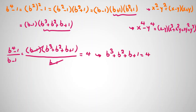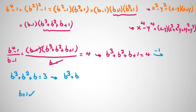Subtracting 1 from both sides gives b³ + b² + b = 3, so b³ + b² + b - 3 = 0. The degree is 3, so we try to find at least one root. b = 1 works since 1³ + 1² + 1 = 3. Because b = 1 works, one factor is (b - 1).